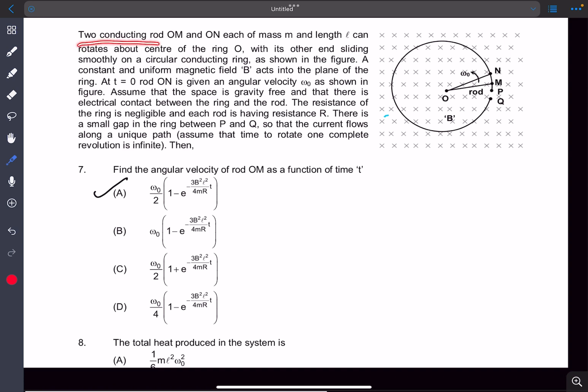We have two conducting rods OM and ON, each of mass M and length L, rotating about the center of the ring O with their other ends sliding smoothly on a circular conducting ring as shown in the figure. A constant and uniform magnetic field B acts into the plane of the ring. At t equals 0, rod ON is given an angular velocity of omega naught.